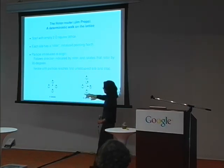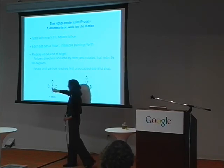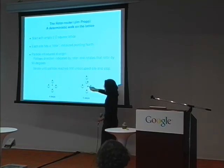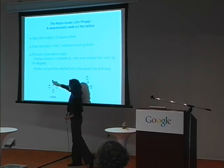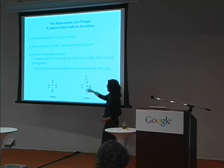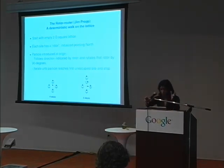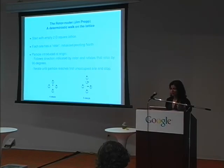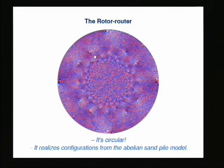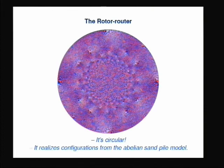It gets more interesting when you start adding more particles. The fifth particle comes in and moves to the north — the direction the rotor is pointing — leaving the rotor pointing east. Then moves into this site, again moves north, but leaves this site pointing to the right, then moves into the unoccupied site. So it's a deterministic walk on a lattice, and the rotors have four states. We color the lattice according to the state of the rotor. This is what the Roto-Rooter looks like after 200,000 particles have landed — colors correspond to whether the rotor is pointing north, south, east, or west.